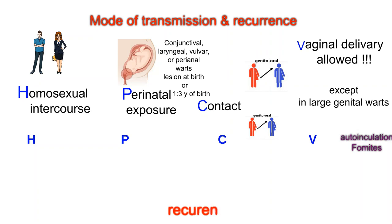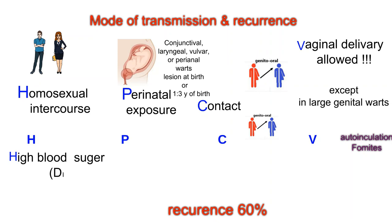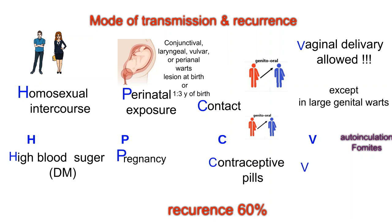Recurrence of infection is 60%, due to: high blood sugar and diabetes mellitus, pregnancy, contraceptive pills, and a vulnerable immune system.